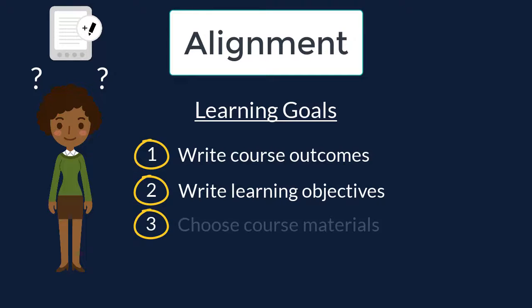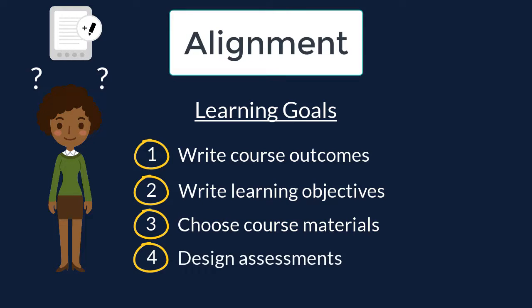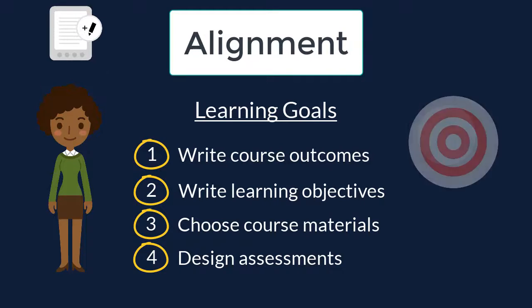Next, think about how students will obtain the knowledge and skills necessary to accomplish the learning goals — this is when you choose the course materials. Finally, design activities and assessments that allow students to demonstrate what they have learned or the skills they have acquired. These activities and assessments should follow the knowledge level of the associated course outcomes and learning objectives. Starting with the learning goals in mind makes it possible to build a course that maximizes student success in achieving these goals.